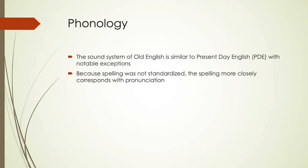Because spelling was not standardized at the time, a lot of people were writing things how they would pronounce them, so the spelling is going to more closely correspond with pronunciation. You'll notice that a lot of the IPA symbols are going to correspond pretty well with what we see written down in the transcriptions that we have for Old English.